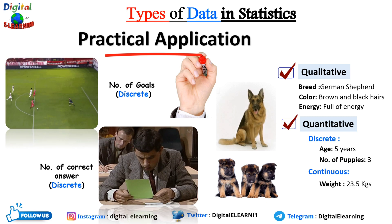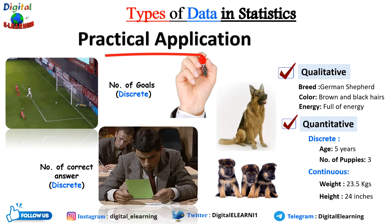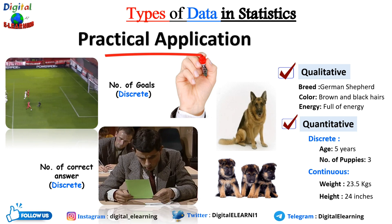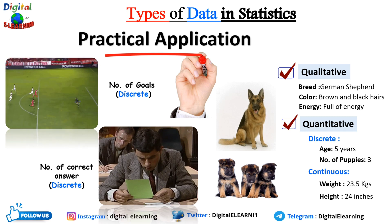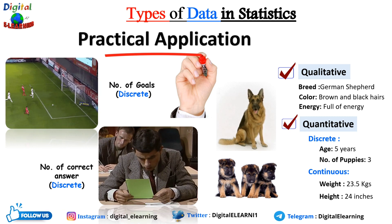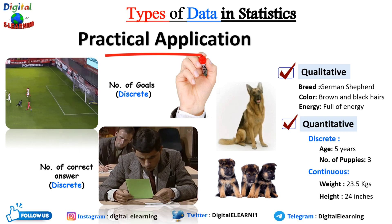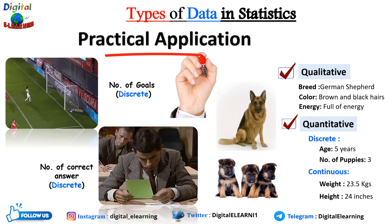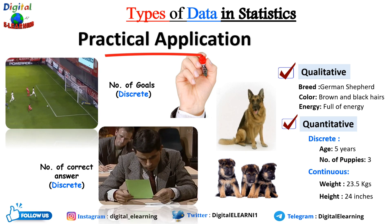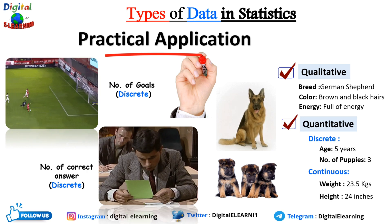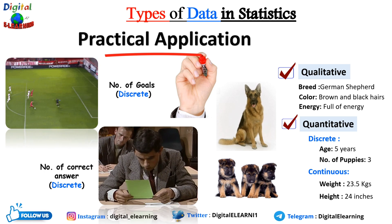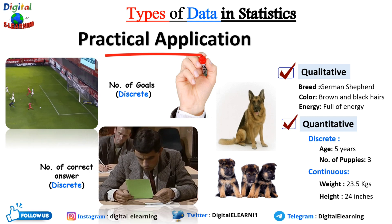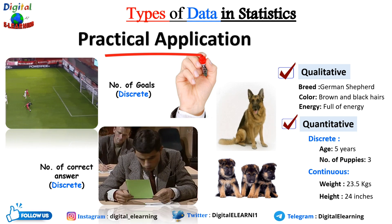On the continuous scale, we have weight at 23.5 kg and height at 24 inches. In summary, the dog possesses both qualitative and quantitative attributes. Qualitative attributes describe characteristics that fall into categories or groups, while quantitative attributes involve measurements expressed as numerical values. Some characteristics like height and weight can be discrete or continuous depending on the level of precision you want.